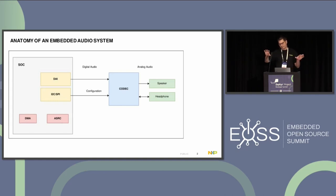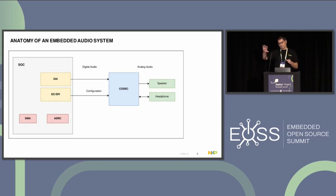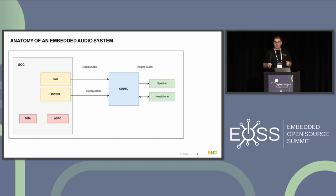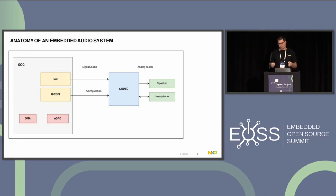whose scope is to get numbers from memory and convert them to digital audio signals. Then we have a codec, whose goal is to take the digital audio and transform it into analog audio. Of course, we have the other path for recording — converting the analog signal to digital and then to numbers. We also have helper IPs like DMA and a sample rate converter.